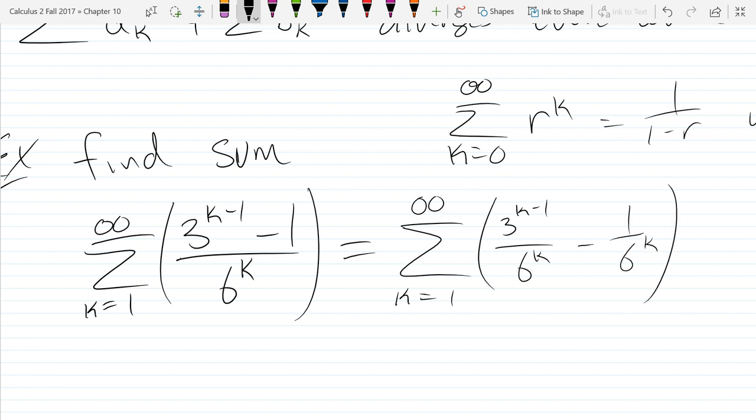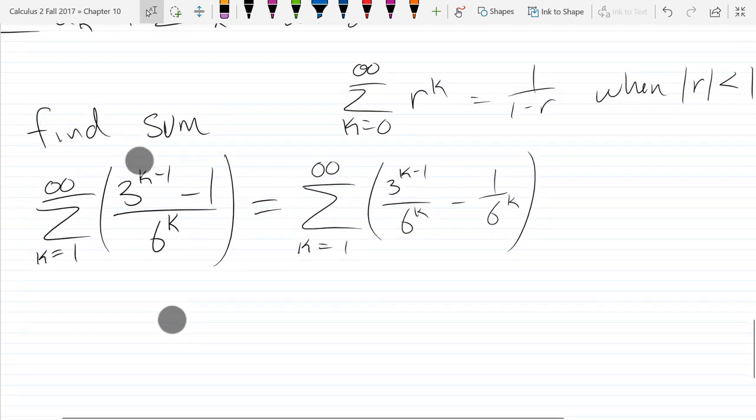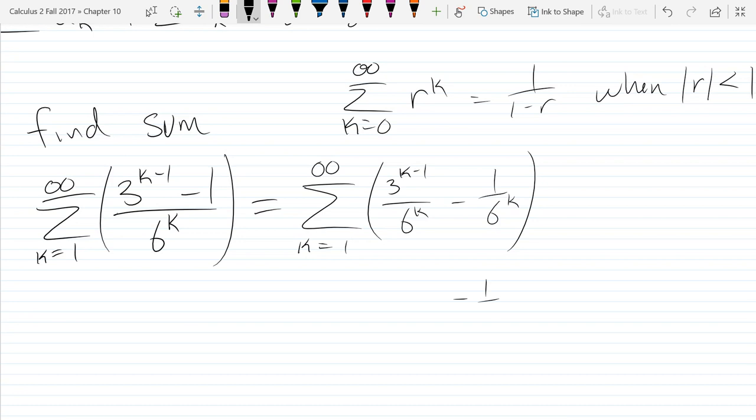So let's split the fraction up in the numerator. So I didn't do anything fancy there, just wrote it as two fractions subtracted. This looks a lot more like a geometric series. It actually looks a lot like two geometric series right here. So the second one is very close to being a geometric series. I'm just going to rewrite it as 1 over 6 to the K. So the second part is no problem. That's definitely a geometric series.